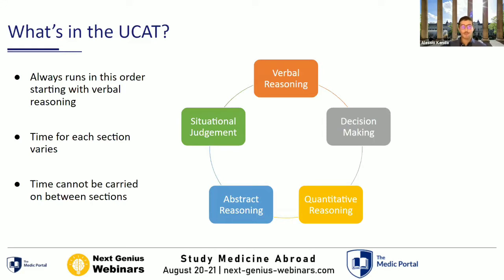Now, what's in the UCAT? The test always starts with verbal reasoning, then decision making, quantitative reasoning, abstract reasoning, and finally situational judgment. This running order is always the same. Time varies per section, and this exam is all about time pressure — if you had unlimited time, you'd probably score 100%, but the examiners put you under immense pressure. Critically, time cannot be carried over between sections, so think of this as five mini examinations.